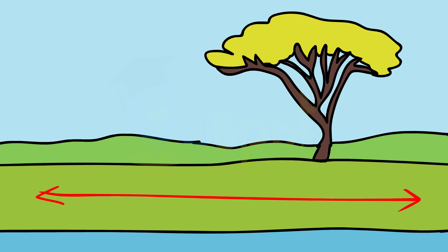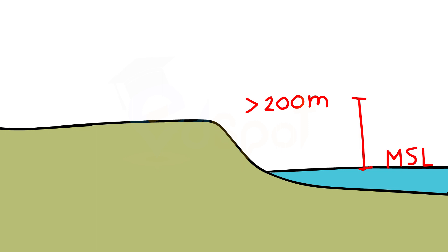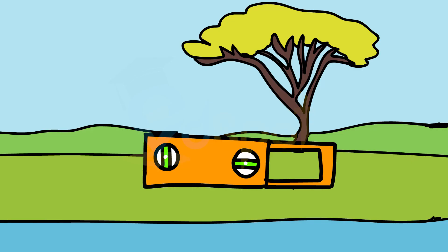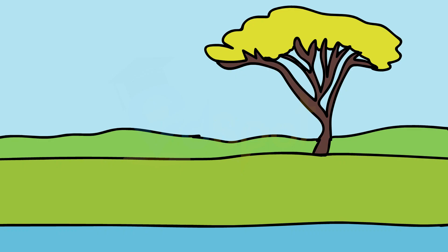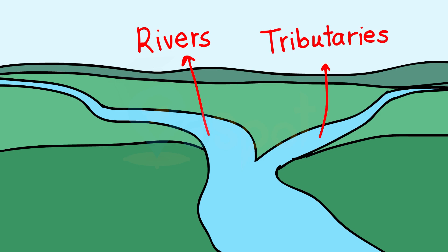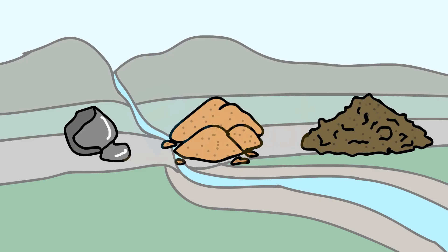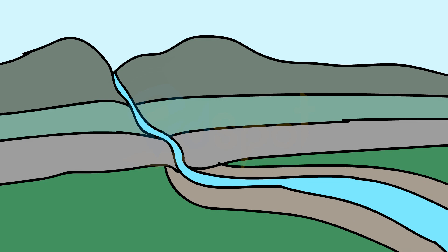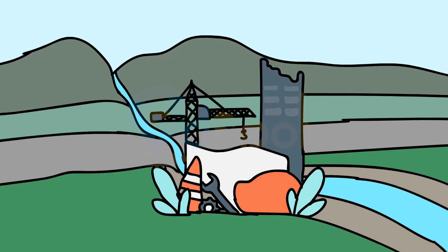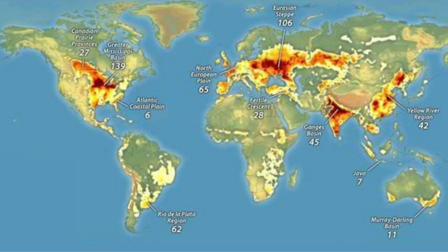Plains are large stretches of flat land. They are generally not more than 200 meters above mean sea level. Some plains are extremely level; others may be slightly rolling and undulating. Most of the plains are formed by rivers and their tributaries. The rivers flow down the slopes of mountains and erode them. They carry forward the eroded material — when they deposit their load consisting of stones, sand, and silt along their courses and in their valleys, it is from these deposits that plains are formed. Generally, plains are very fertile.